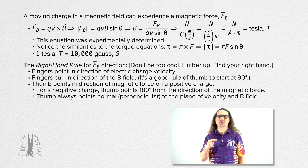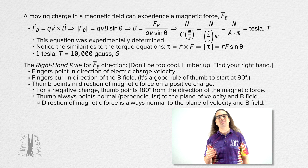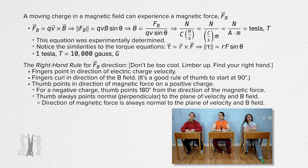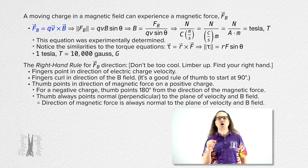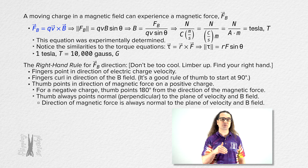In other words, the direction of the magnetic force is always normal to the plane created by the velocity of the electric charge and the magnetic field. The cross product version of the magnetic force equation, which uses unit vectors, also gives the direction of the magnetic force — only rather than using the right hand rule, it gives you the direction in terms of unit vectors.